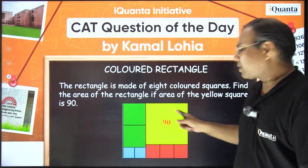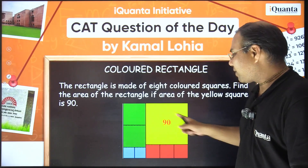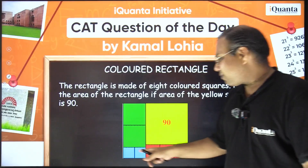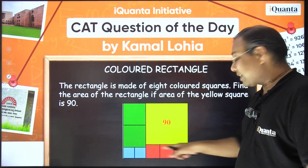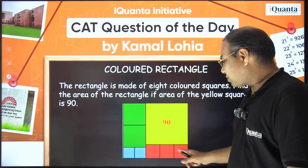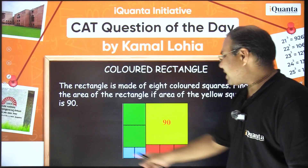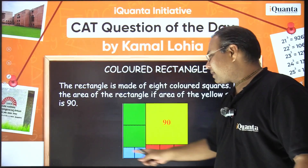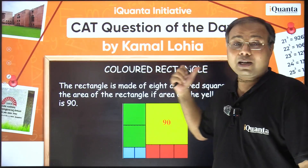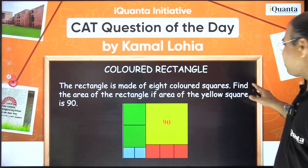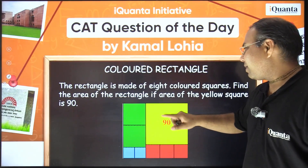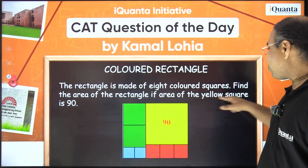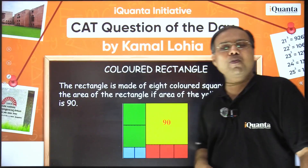This yellow shape is a square, these green ones are equal squares, these two blue squares are also equal, and these three red squares are also equal. Combining all eight squares — one yellow, two green, two blue, three red — they make up a rectangle. The question asks: find the area of the rectangle.